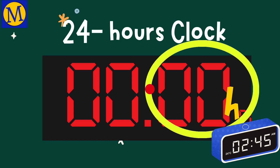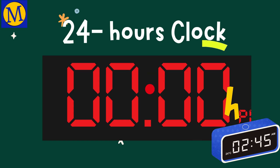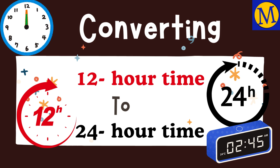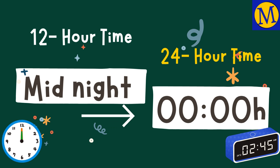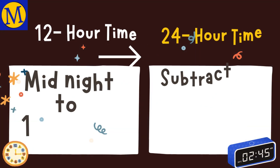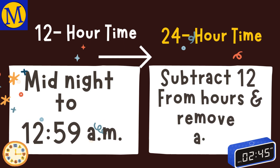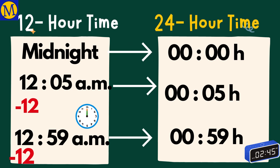How to convert 12-hour time to 24-hour time. Midnight is zero hundred hours, written as 0000H. The time from midnight to 12:59 a.m. is changed to 24-hour time by subtracting 12 from the hours and adding H instead of a.m. For example, five minutes past 12 a.m. becomes 0005H.